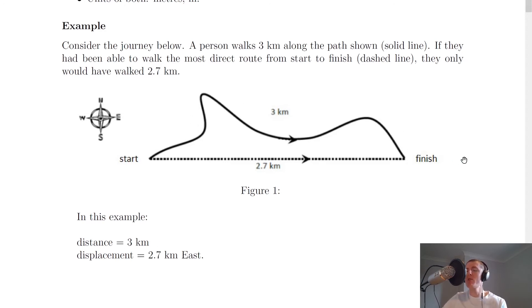Whereas if we want to go the shortest distance from the start to the finish point, drawing a straight line between the two, then we have a distance of 2.7 km. Now that means that our displacement is going to be the shortest distance with a direction.